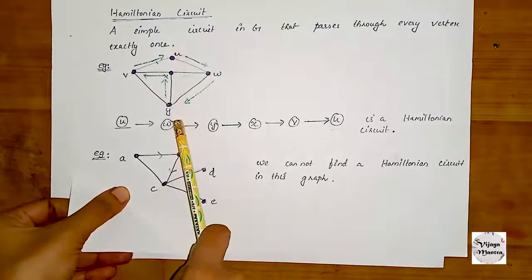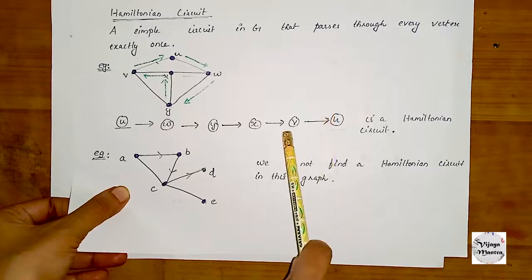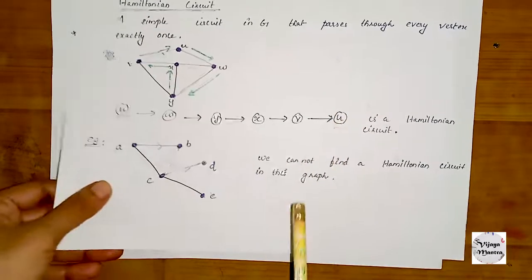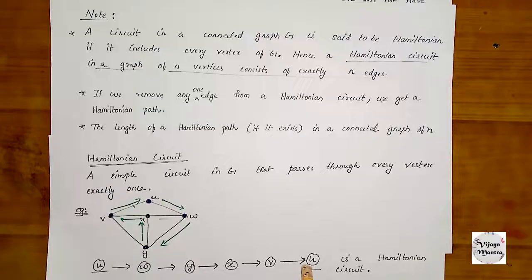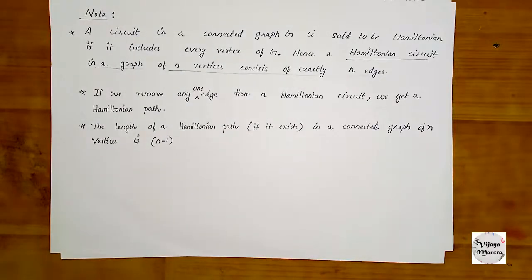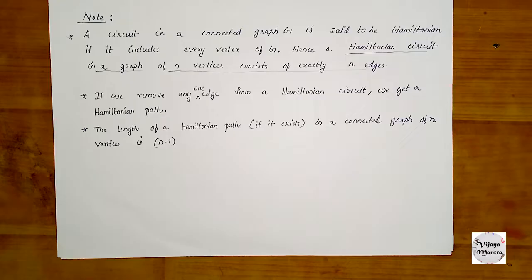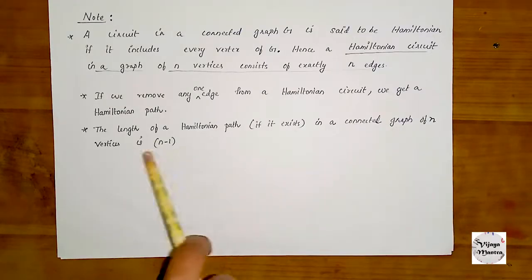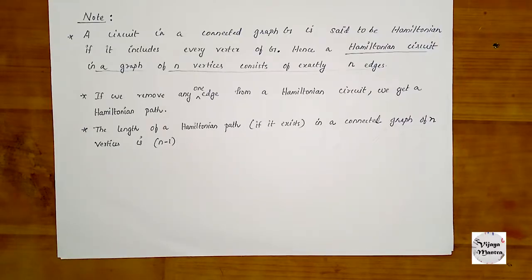In the last example, if we remove an edge from the Hamiltonian circuit, we remove one edge and get a Hamiltonian path. That is the number of edges in the Hamiltonian path equals N minus 1.